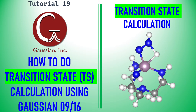Dear friends, this is tutorial 19 in Gaussian. In this tutorial I am going to teach you how to do transition state calculations using Gaussian 09 or 16. This is the transition state structure I have made for you. In this video I will clearly tell you how to do the transition state calculation with the necessary keywords.